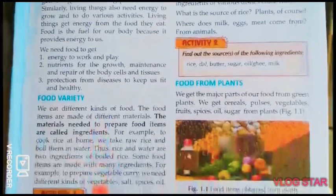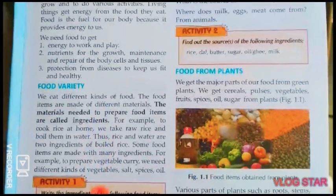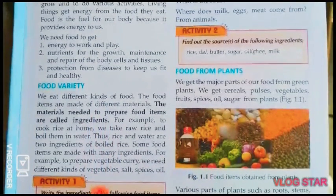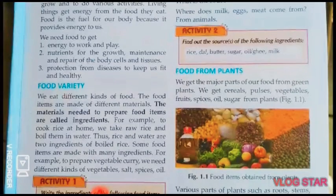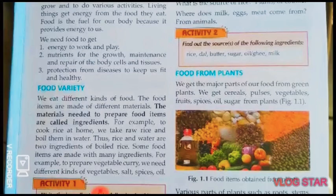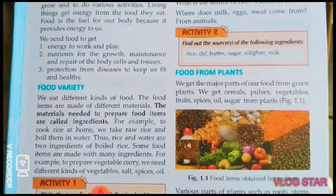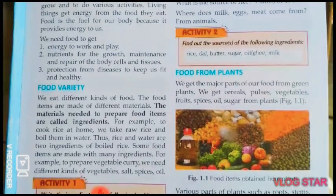Next paragraph: Food Variety. We eat different kinds of food. The food items are made of different materials. The materials needed to prepare food items are called ingredients. For example, to cook rice we need rice and water. Thus, rice and water are the two ingredients of boiled rice.